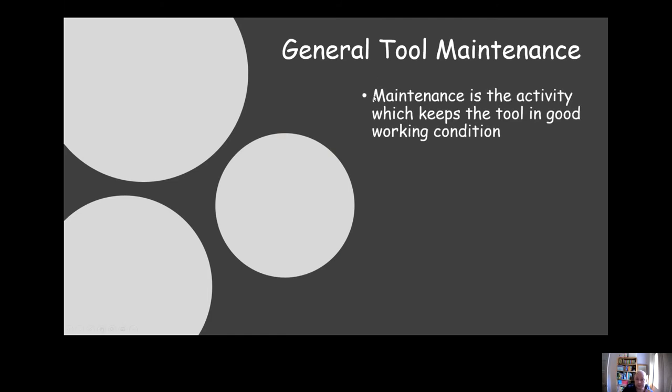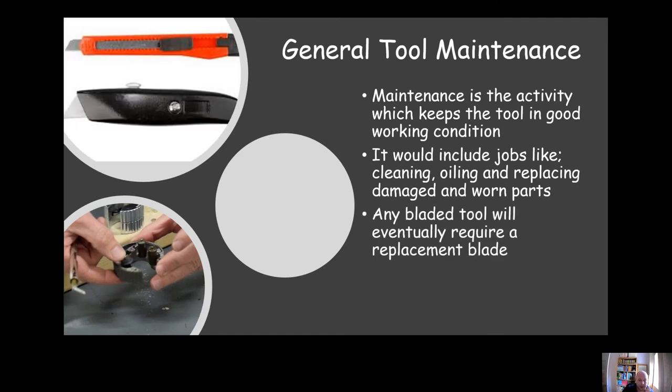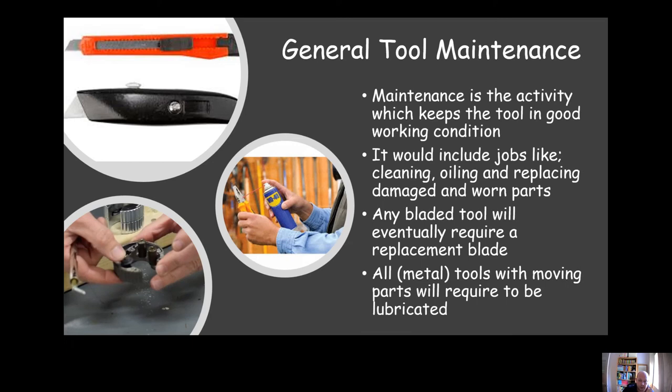General information about maintenance - we need to keep our tools in good condition and part of doing that would include things like cleaning them, oiling them, and replacing damaged parts. Any tool with a blade, be it a cutting wheel or a more traditional blade, will need to have the blade replaced periodically as it becomes old and gets blunt. All metal tools with moving parts will require to be lubricated periodically to allow them to keep moving freely.